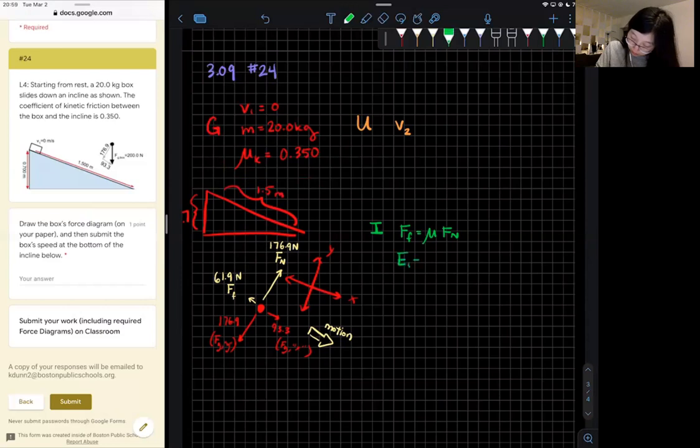So E1 plus W equals E2—that's always helpful whenever you have a net force acting on something, some work happening, some change in energy from the beginning to the end. Also we have force parallel times displacement equals the work done.